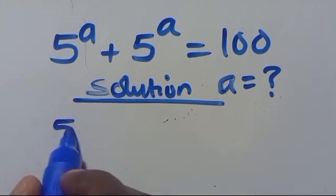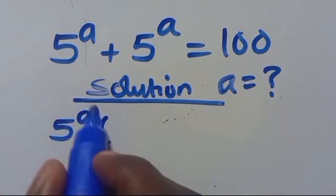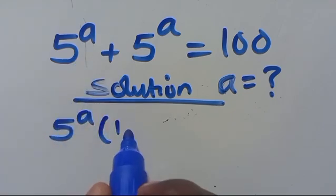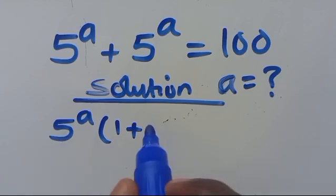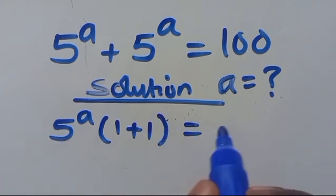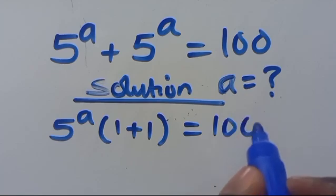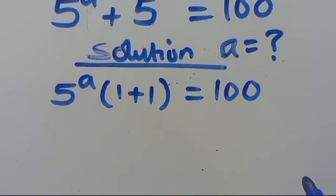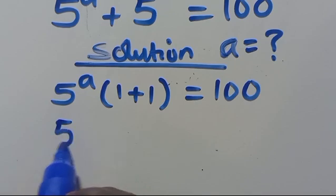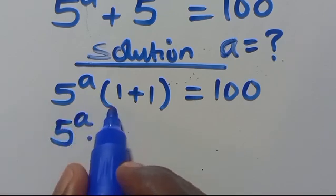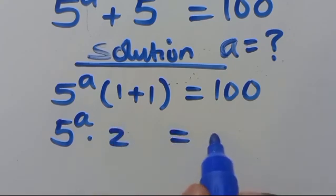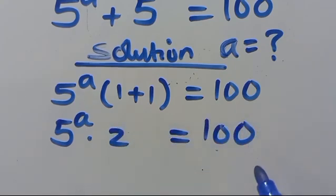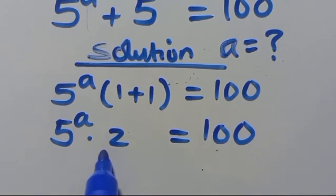We have 5 to the power of a in common, so we can factor it out. We get 5 to the power of a times (1 plus 5), which gives us 1 plus 5 in parentheses equals 100.